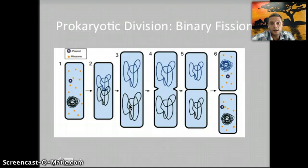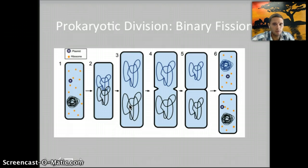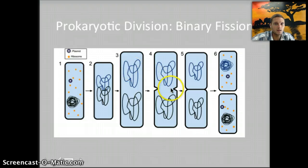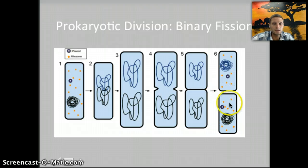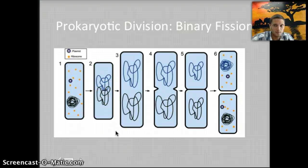How prokaryotic cells divide or reproduce is by a process called binary fission. In binary fission, the DNA is coiled up — it's usually pretty coiled and condensed in the nucleoid region, but it coils up a little bit more. It replicates — we will learn the steps of DNA replication in prokaryotes later. The DNA gets pulled to opposite sides, the cell wall starts to pinch in to prepare for division, the cell wall actually divides, causing the cell to divide, and we end up with two daughter cells that are exactly the same — same DNA, same ribosomes, same plasmids.